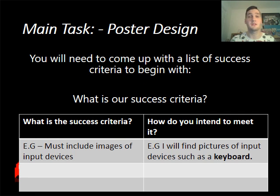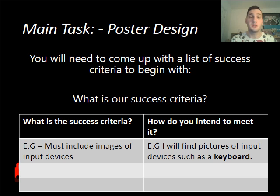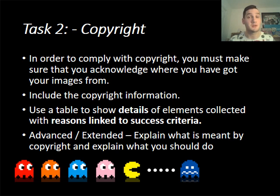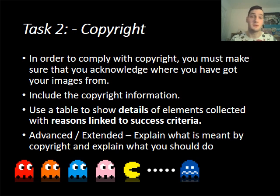The first thing you are going to need to do is produce your success criteria based on the scenario, and think about what you are going to need to include in your poster. Once you have done that, you will need to make sure you comply with copyright — you will need a sources table to acknowledge where you are getting your images from, and include copyright information with details and reasons linking to your success criteria. For those in advanced or extended, you will need to explain what is meant by copyright and what you have to do to meet it.